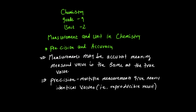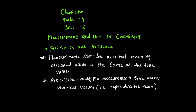A measurement may be accurate or inaccurate. Accurate means the measured value is the same as the true value — the measurement is almost the same as the actual value, so the measurement is accurate. Precision means multiple measurements give nearly identical values.